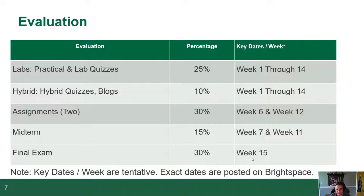How is this course going to be evaluated? Labs are practical submissions worth 25% of your grade, running weeks one through fourteen. There are two assignments worth 30%, due at week six and week twelve. The midterm is 15% of your grade — it'll be either week seven or week eleven, depending on how things go. I'd prefer week seven so you don't have to worry about it during your break. The final exam is 30%, during week fifteen.